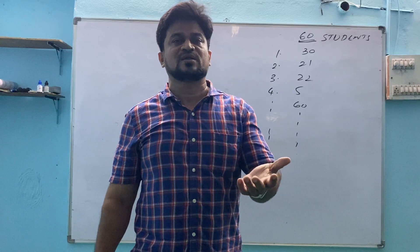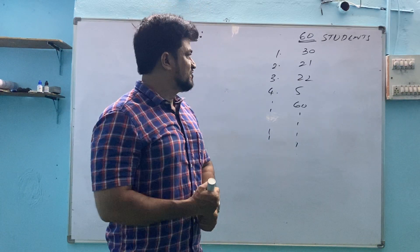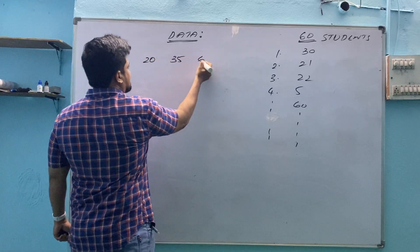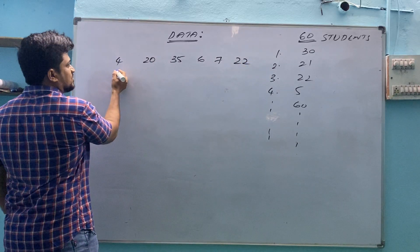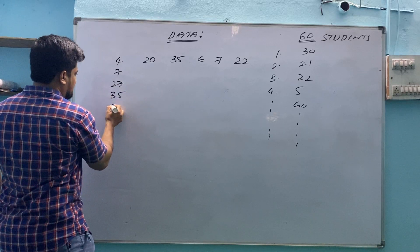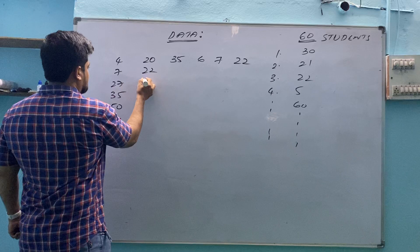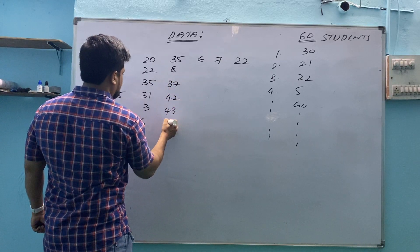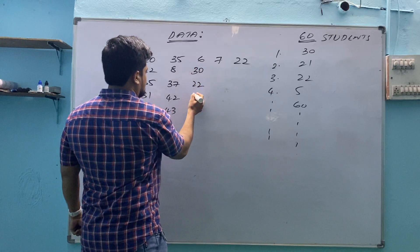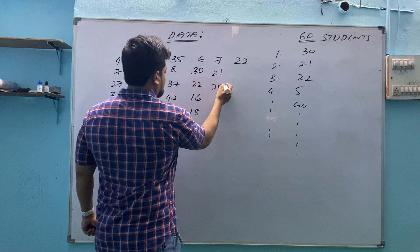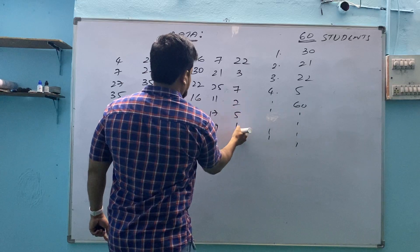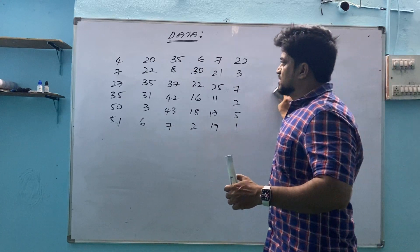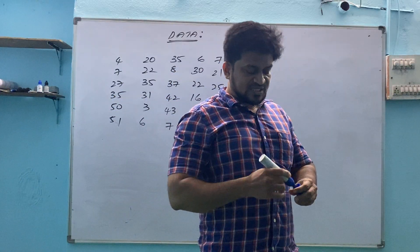Based on the information I can ask for your marks. That marks information can be recorded in different ways. Suppose I have the marks of 36 students written down directly: 20, 35, 6, 7, 22, 7, 27, 35, 50, 51, 15, and so on. After asking the marks of every student, this is the data belonging to 36 students — their marks in one subject, say Economics.